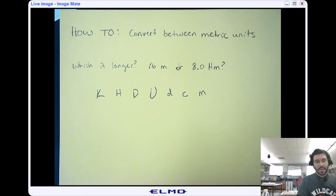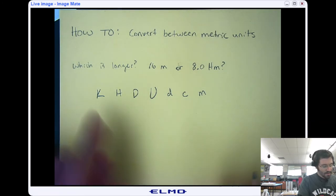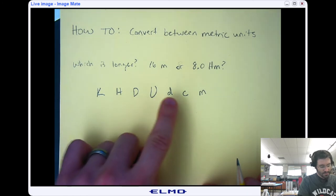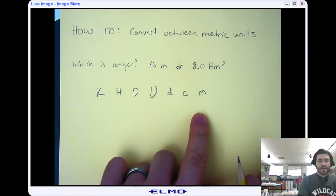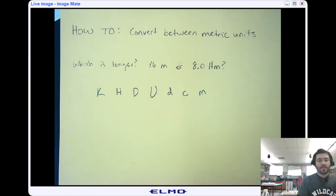Sometimes, I don't use this one in class very much, but sometimes people use the memory trick: King Henry died unexpectedly drinking chocolate milk. So if you need to remember that for some reason, you can remember it, but you can always go check your notes.